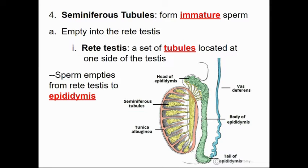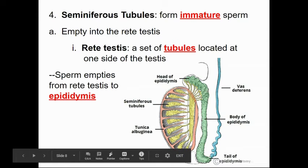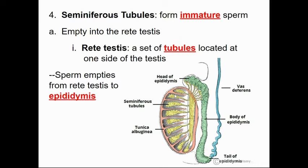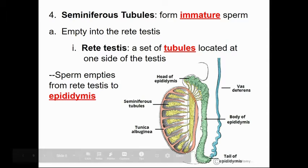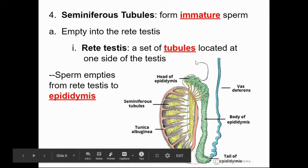The seminiferous tubules are responsible for producing immature sperm; they'll complete their development later on. The testis is covered by the tunica albuginea, which protrudes inward dividing it into lobules separated by septa. Within each lobule is coiled tubing — the seminiferous tubules — which produce the sperm. These lead into the rete testis, then into the comma-shaped epididymis, and out to the vas deferens.